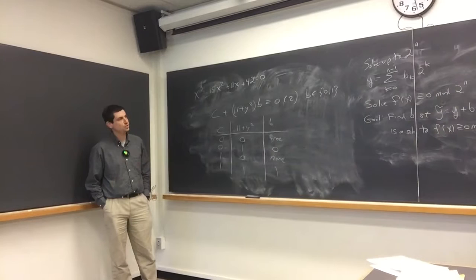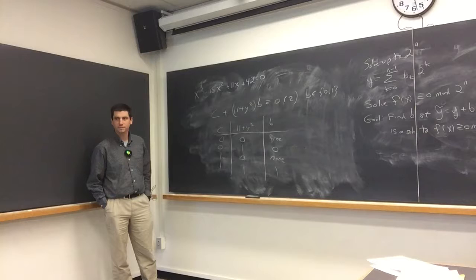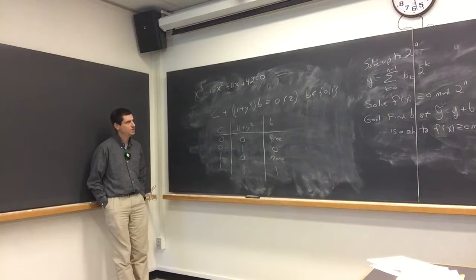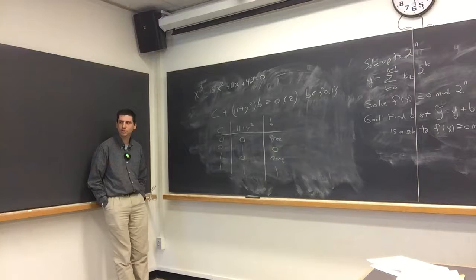The difficulty is recognizing what's happening. The 11 + y², where does that come from? When you're looking at a polynomial x³ − 15x² + 11x + 42 and you get something involving a y², what might you be thinking of? What related polynomial?